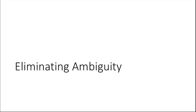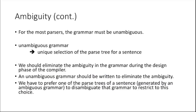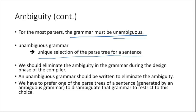The next topic is elimination of ambiguity. Not all ambiguity can be eliminated, but some can. For most parsers, the grammar must be unambiguous. Unambiguous grammar means there is a unique selection of parse tree for a sentence — every time you give a sentence, it will produce a unique parse tree. We should eliminate ambiguity in grammar during the design phase of the compiler.